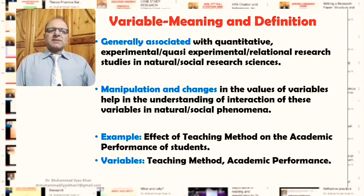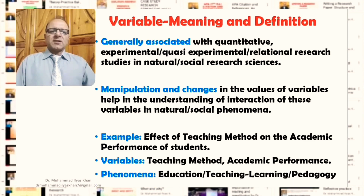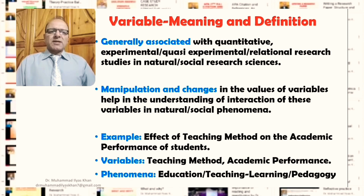An example of trying to find a relationship between two social phenomena is the effect of teaching method on the academic performance of students. Here we have two main variables: teaching method is one variable and academic performance is the other. The phenomena from which we have taken these variables is education, teaching, learning, or pedagogy. This is an example from social sciences of how we explore the relationship of variables in the research context.